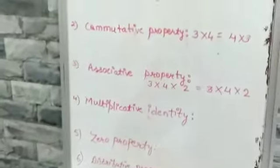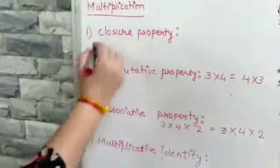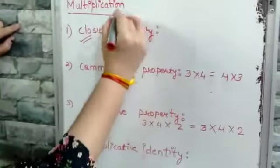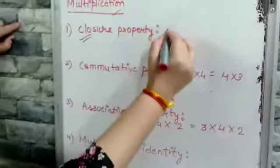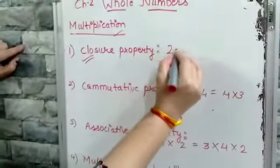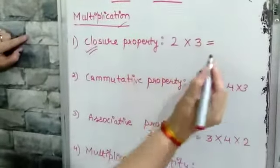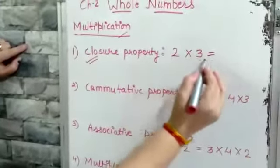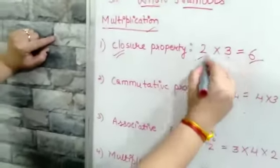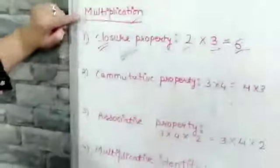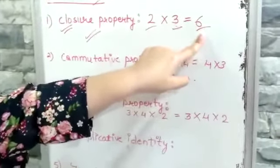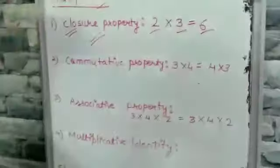The first property we covered in addition as well as subtraction was closure property. Closure property says that if we multiply any two whole numbers, the product which will come will be a whole number. So, 2 and 3 are both whole numbers, and after multiplication, 2 times 3 is 6. Since 6 is also a whole number, closure property is true for multiplication. When we multiply two whole numbers, the product will be a whole number.